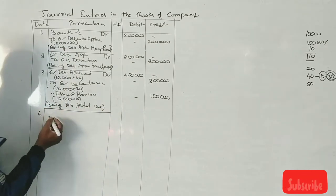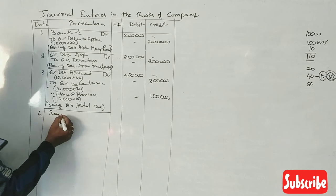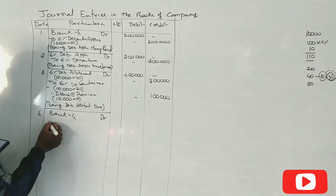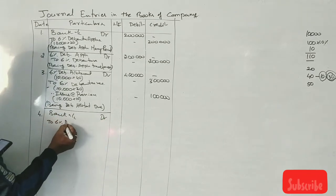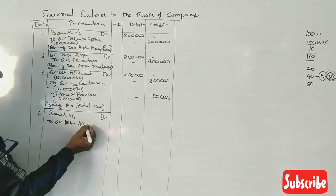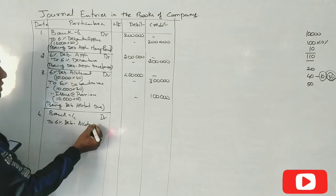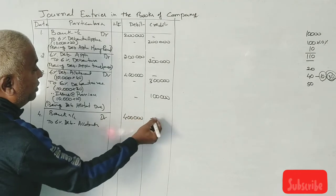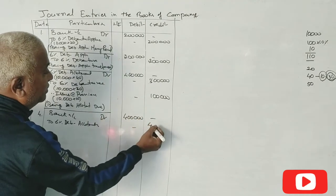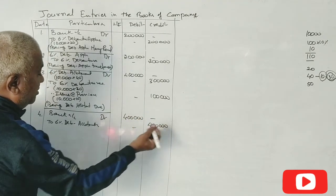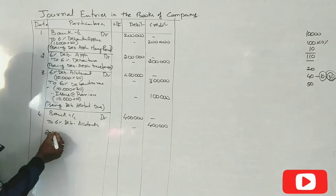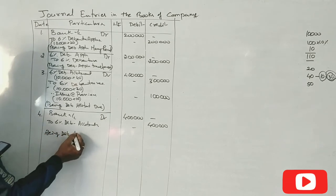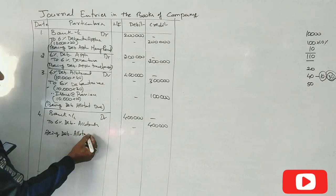Fourth journal entry: Bank Account debit to 6% Debenture Allotment Account credit — ₹4 lakhs. Narration: Being debenture allotment money received.